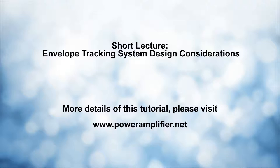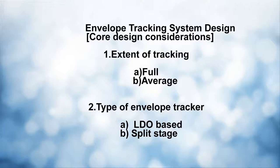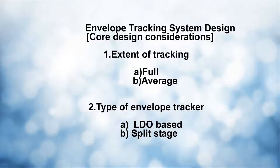I will one by one count and show you different constraints so you get a feeling of the complexity involved in the system design of envelope tracking. The first thing is that in system design one has to consider whether to go for a full-fledged envelope tracking system or an average power tracking system. A full-fledged tracking system fully follows the input signal and requires very high bandwidth, while average power tracking does not track 100% of the envelope — there are many trade-offs associated with each.